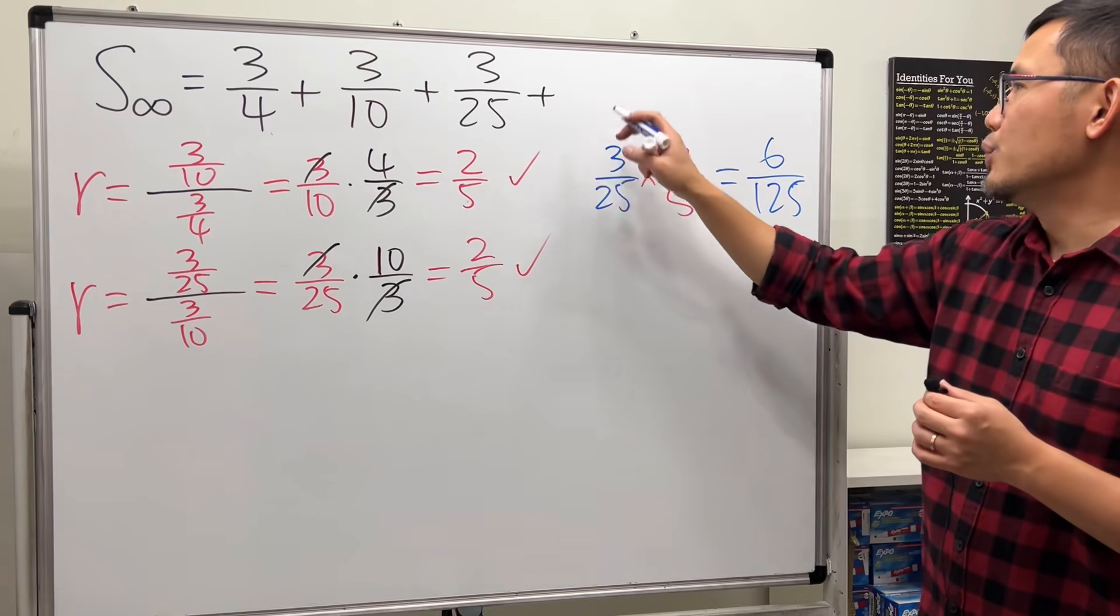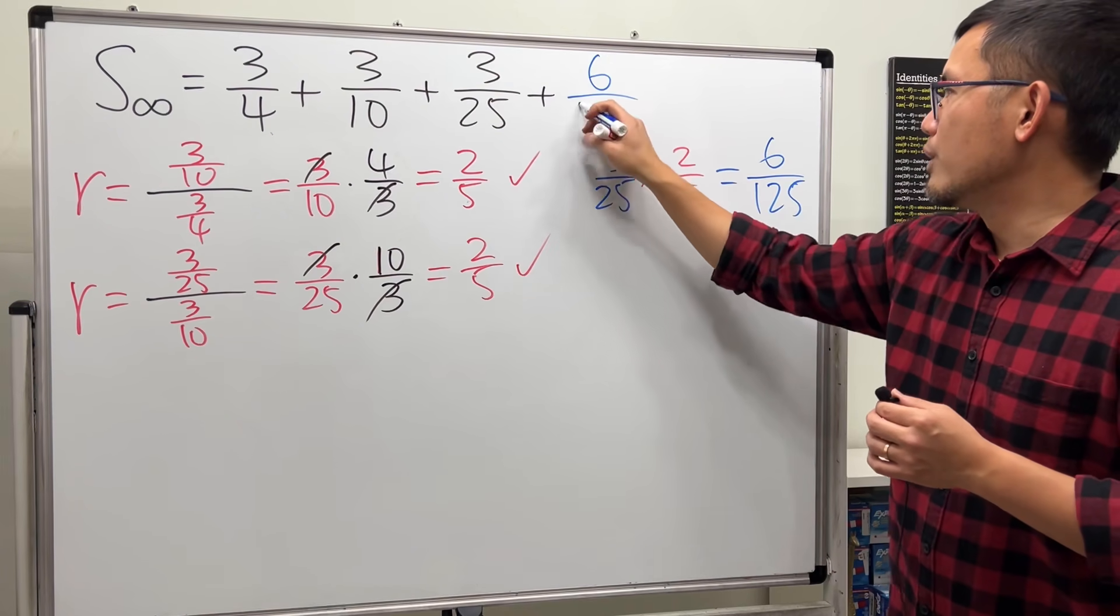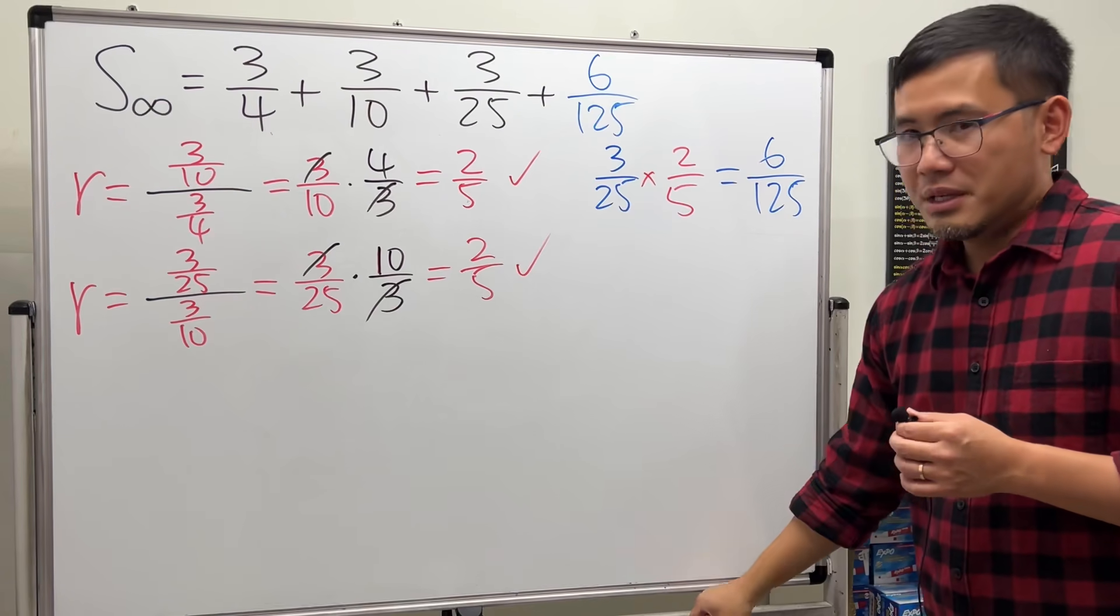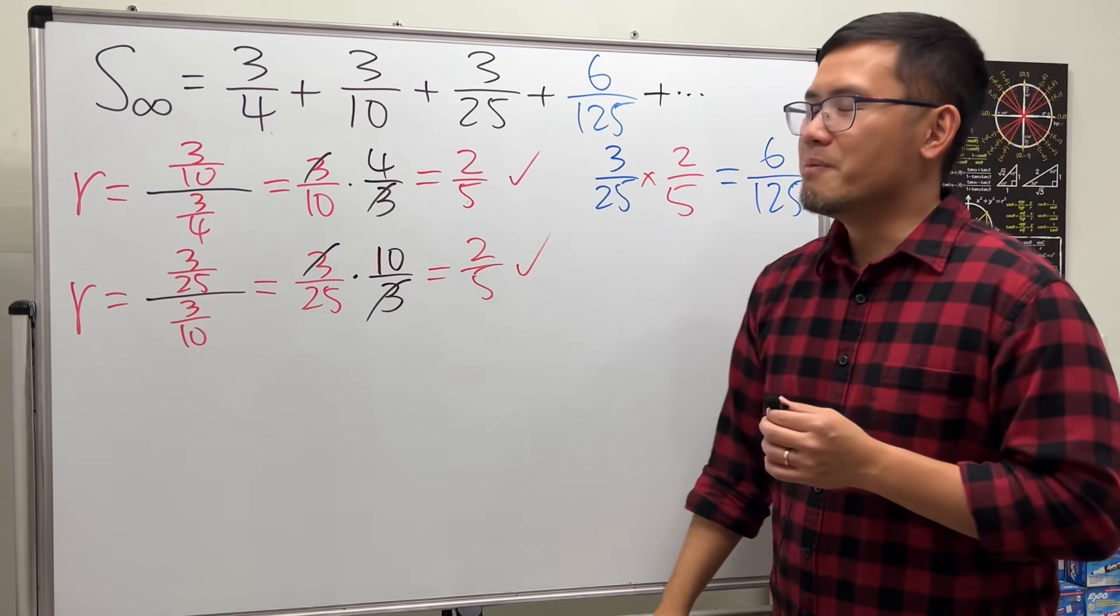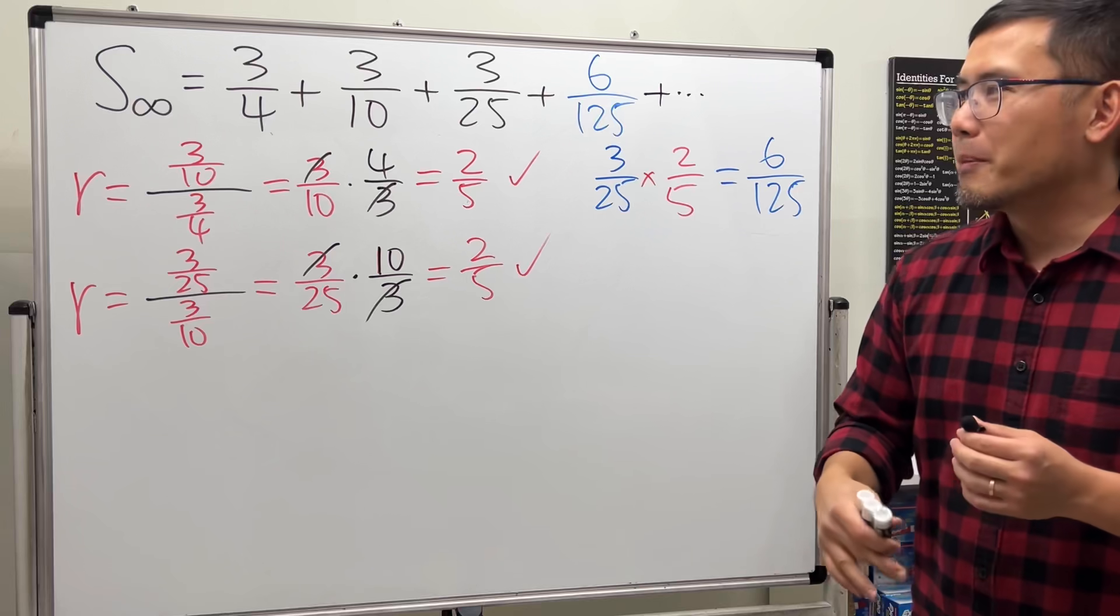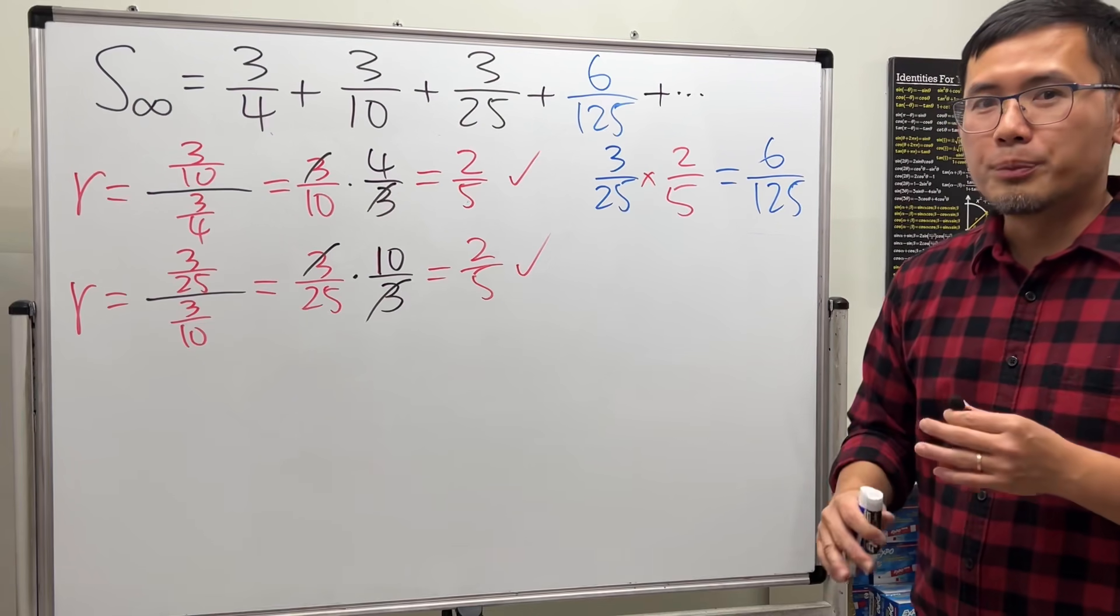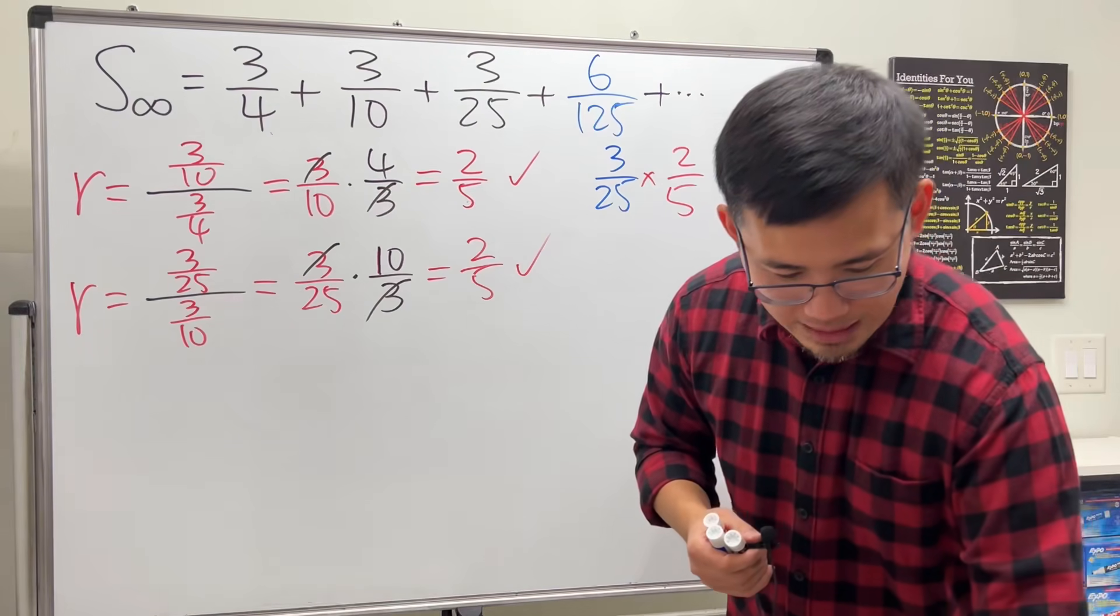So the next term that you will have to add is 6 over 125. As I said earlier, I think this is a pretty... well, it depends on if you want to say pretty creative question or a pretty mean question. So up to you.